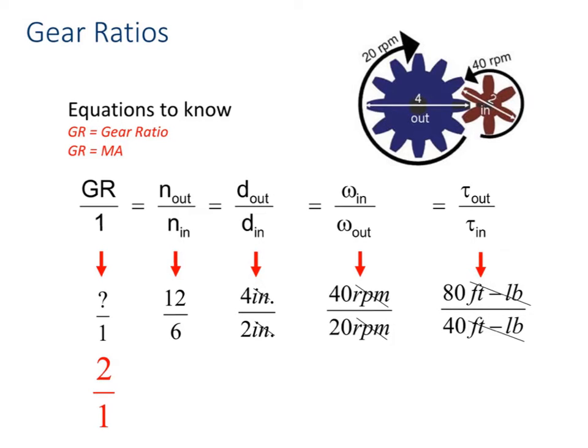Here is our angular velocity. Notice that this one is opposite. N, D, and torque are all out over in.